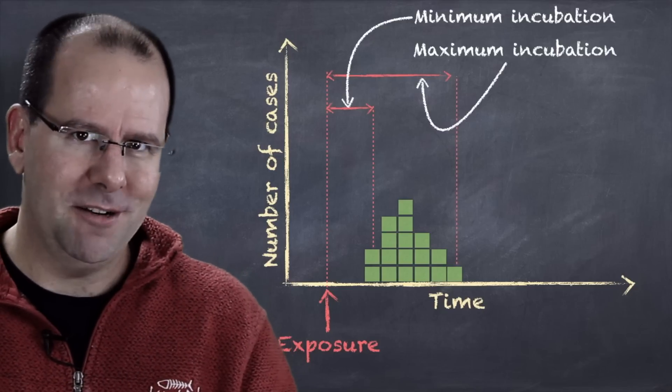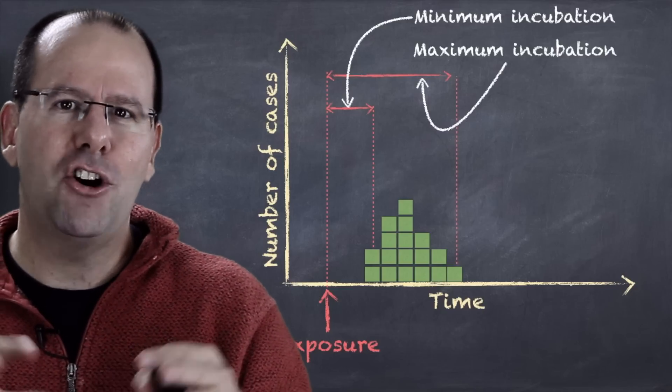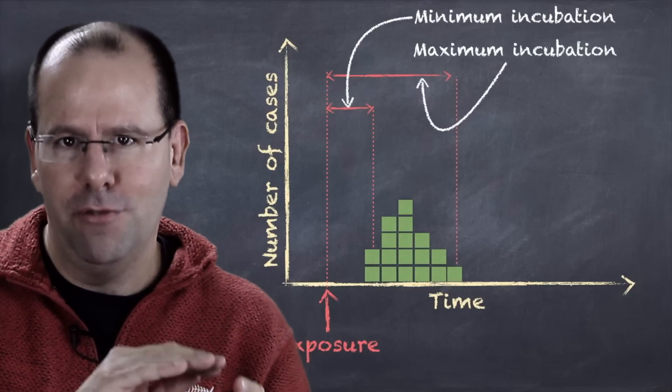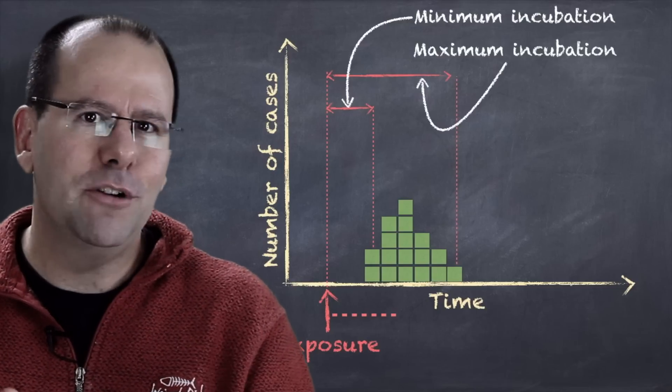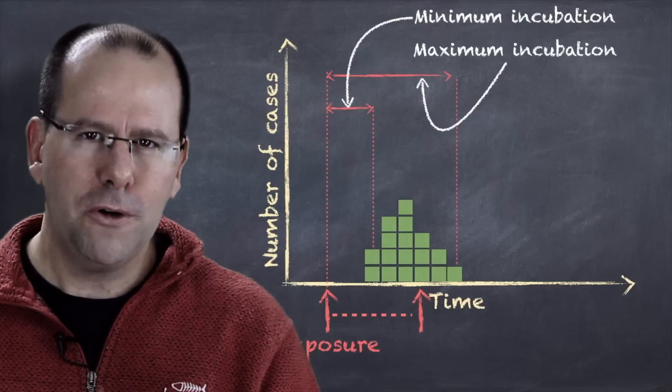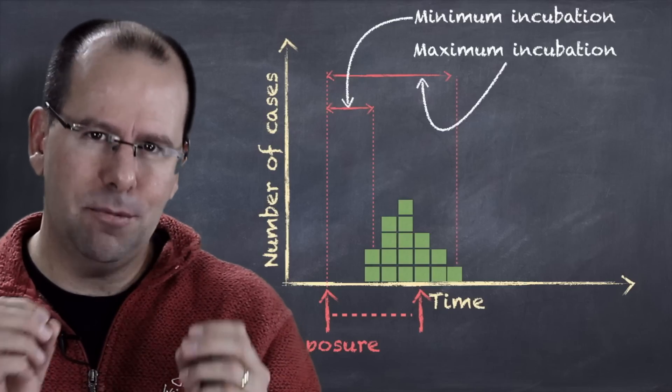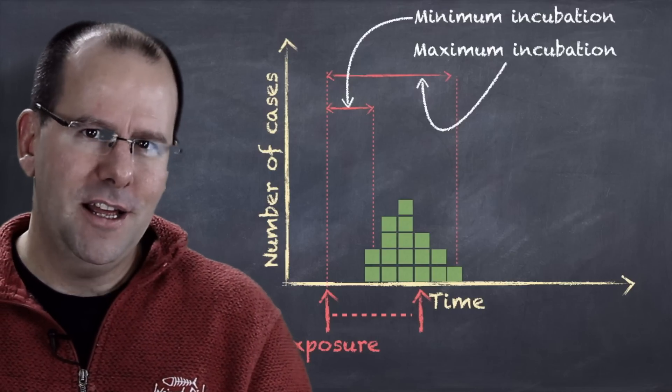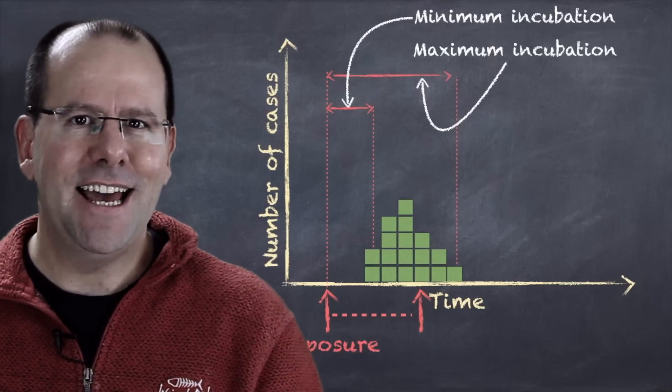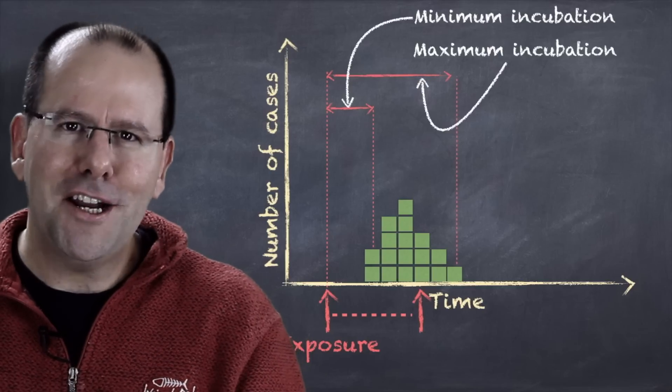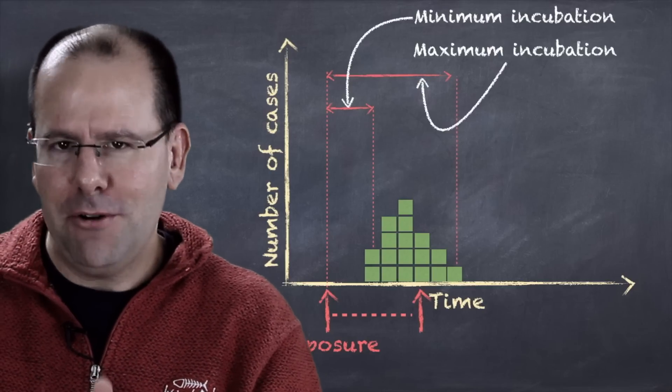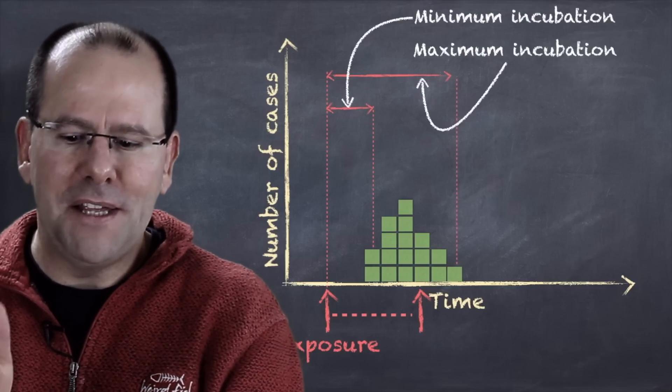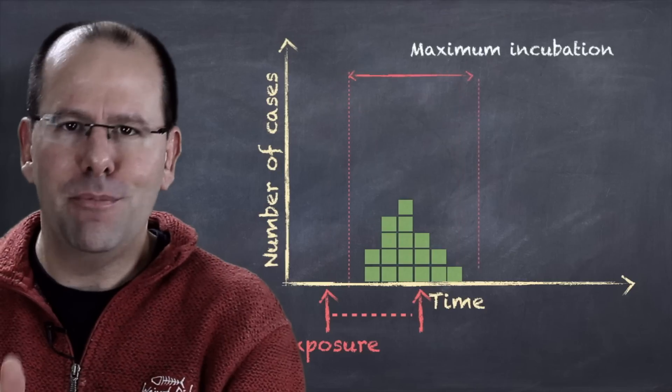Now let's imagine that this wasn't a point source outbreak. Let's imagine that this was a common source outbreak and basically that means that the population was exposed to the pathogen over a period of time, like for example if the water source had pathogens in it. So the important thing here in terms of epidemic curves is that the population is exposed for an extended period of time. Remember that in a point source outbreak the people continue to get sick until the end of the maximum incubation period. So in a common source outbreak, because the period of time during which people are exposed is extended, the point at which people stop getting ill will be the maximum incubation period from the end of the exposure.